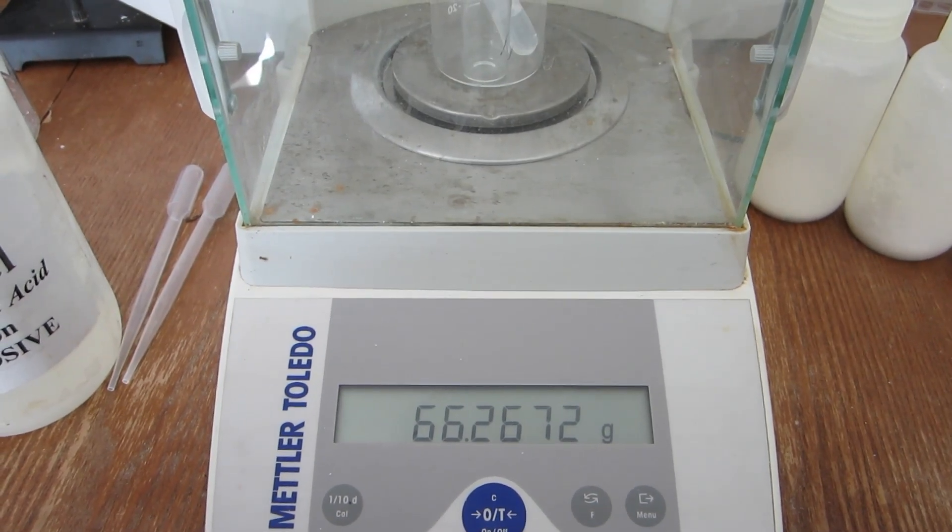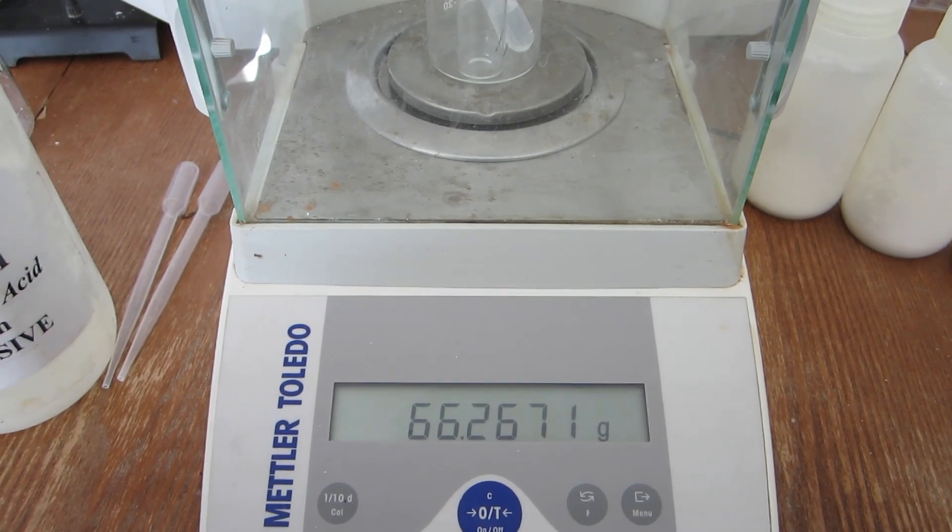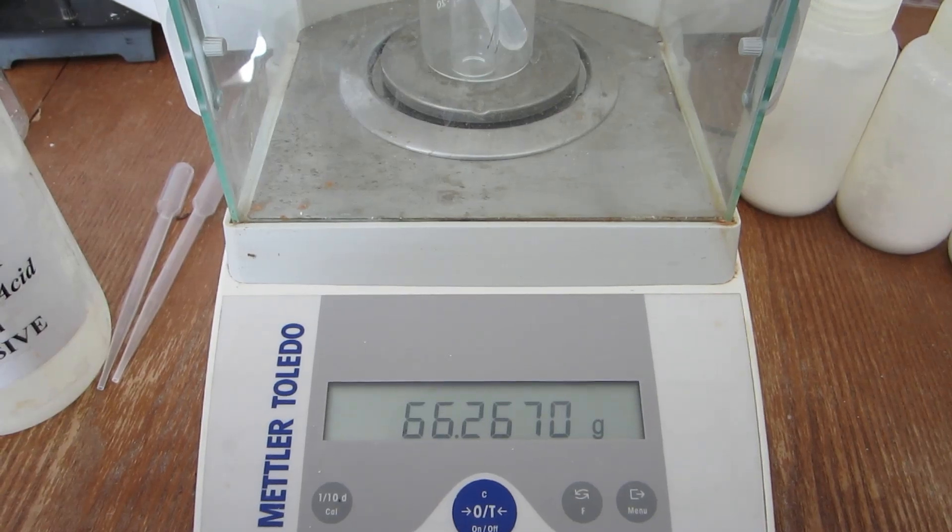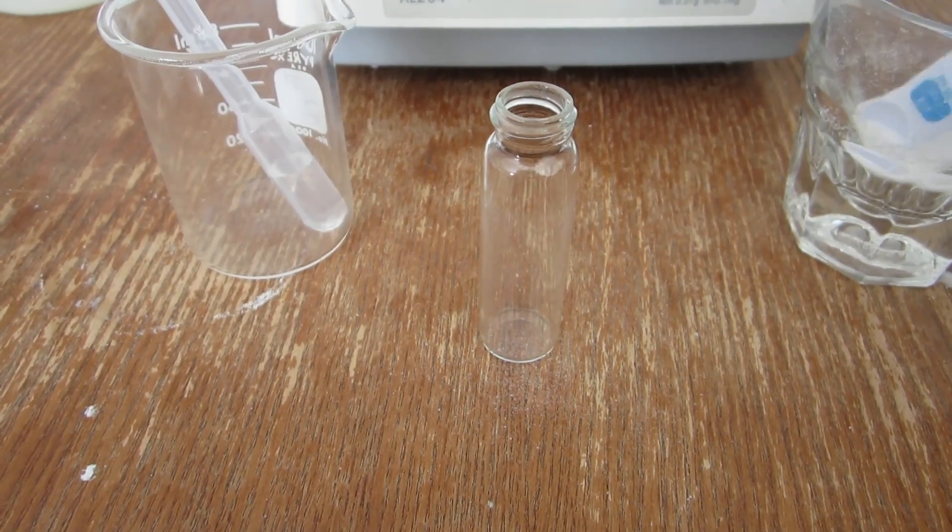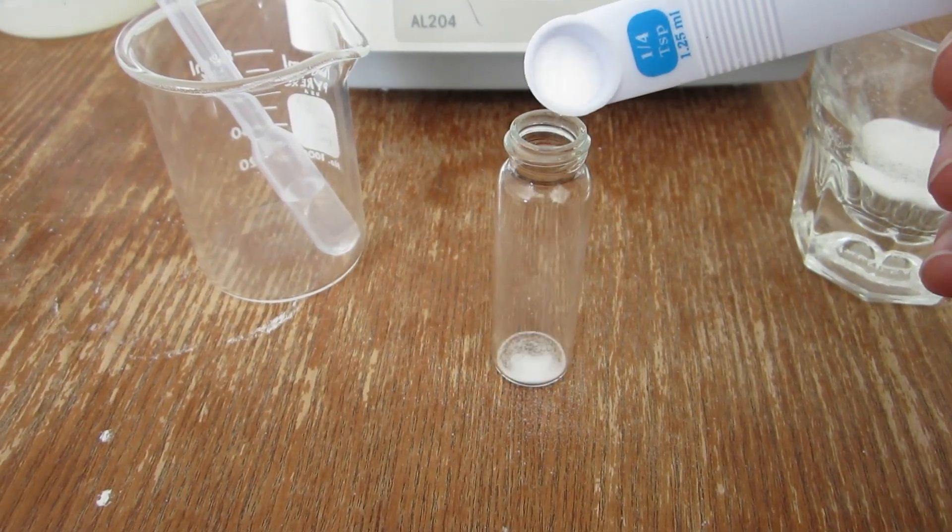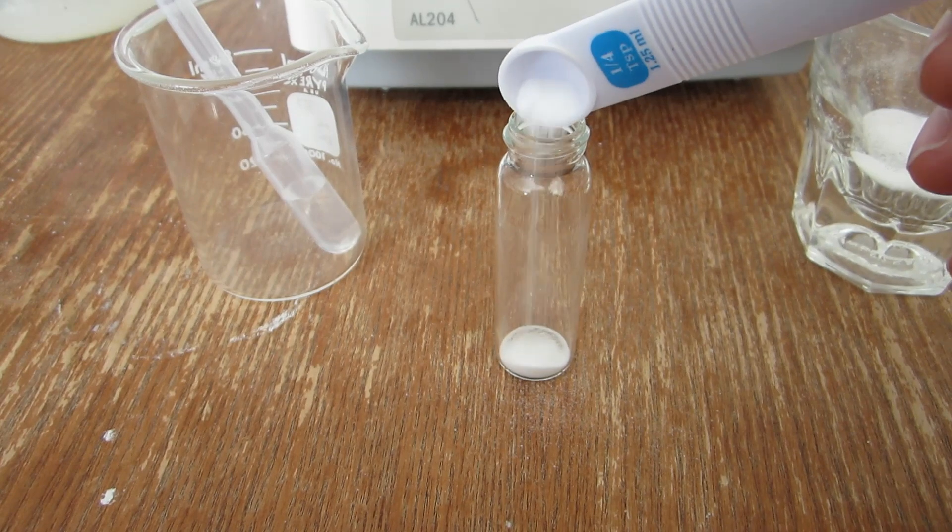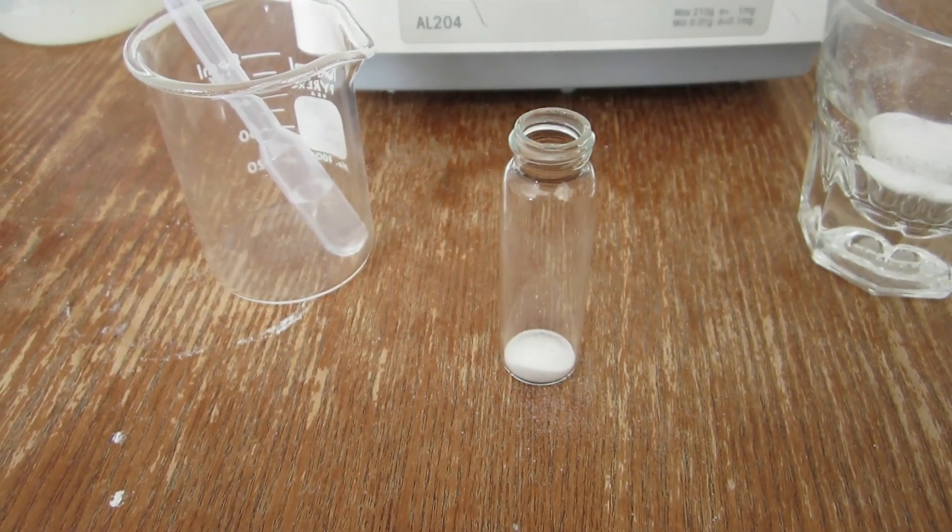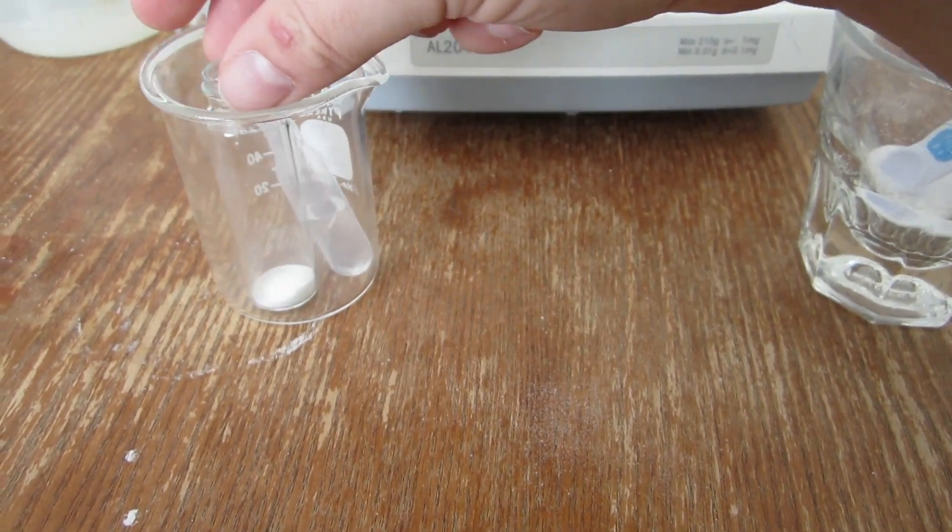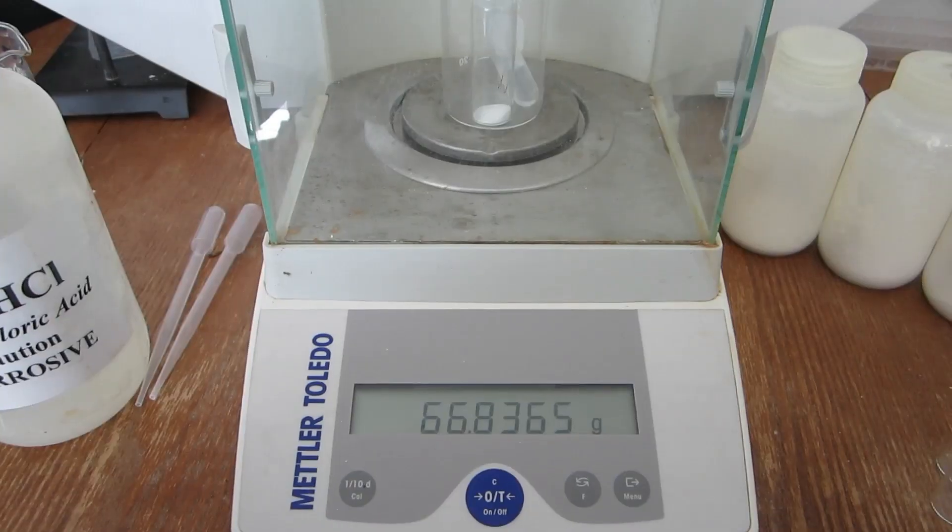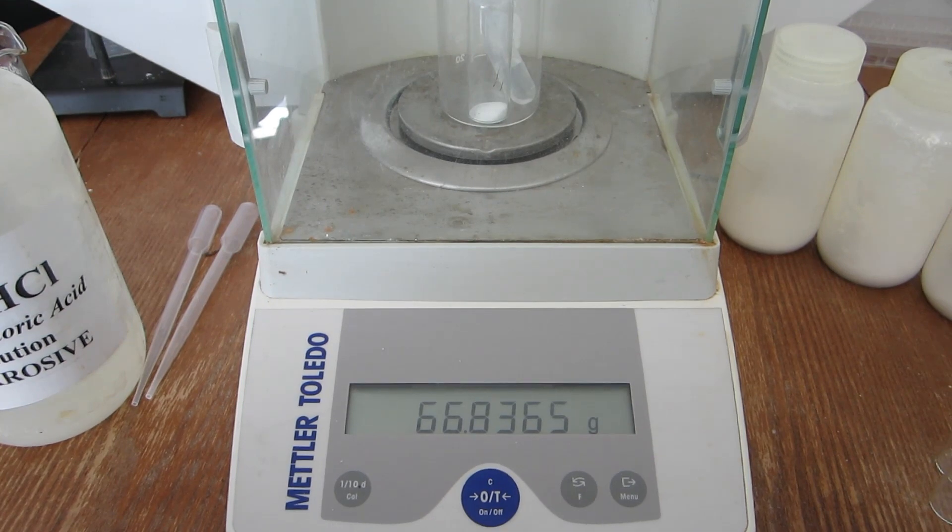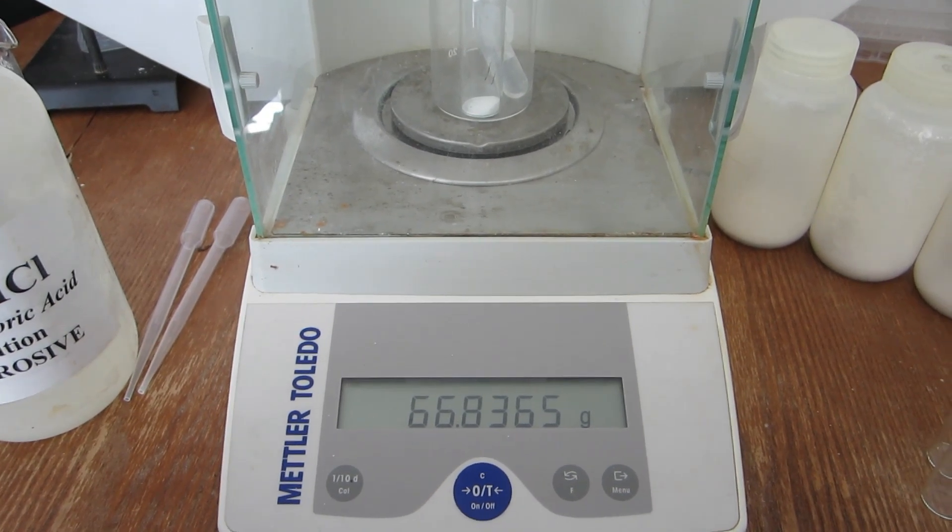For the third trial, the mass of the empty containers and the acid is displayed here. Again, approximately one-half gram of sample is added to the sample vial, and then placed back in the beaker to obtain the second weighing. The mass of the containers, acid, and carbonate sample for trial number three is displayed here.